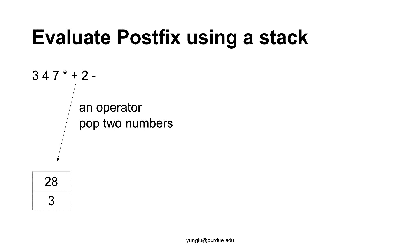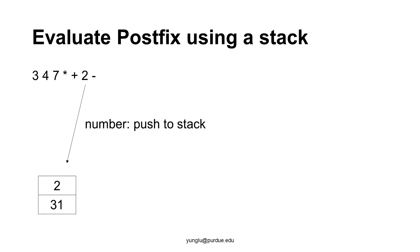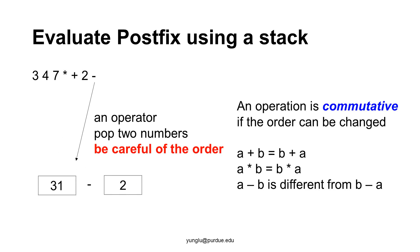Next, we encounter an operator again. We pop two numbers from the stack: 3 and 28. The operator is addition, giving a result of 31, which is pushed to the stack. Number 2 is then pushed to the top of the stack. The next operator is subtraction. We need to pop two numbers from the stack and be careful about the order because subtraction is not commutative.